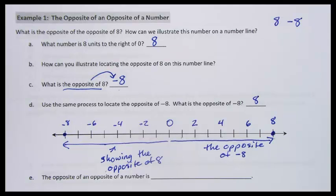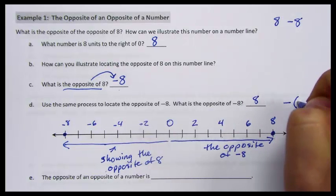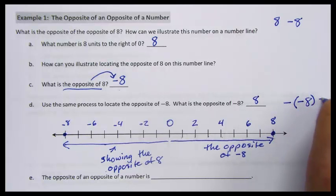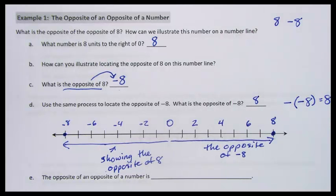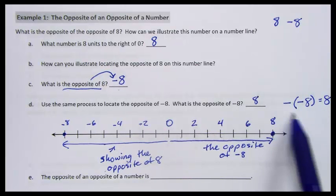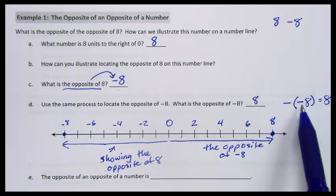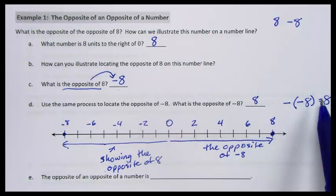When we do this, we can look at it as saying the opposite of the opposite of 8 is 8. That's one way we can show this information. It's like translating from language into symbols. The opposite of the opposite of 8 is 8.